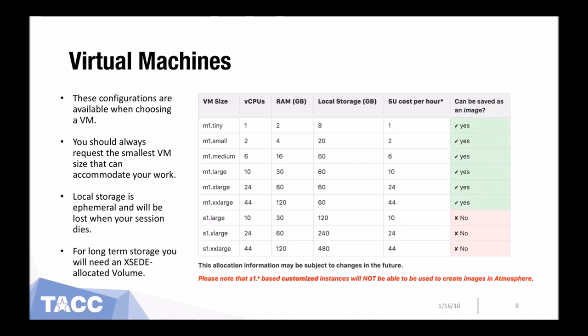The first consideration is how many CPUs you want to run on, but you'll also want to consider the amount of local storage on a VM. This storage can be useful while you're running, but you do need to keep in mind that it's not permanent. Once you kill the VM instance, all of that local storage disappears with the instance. So anything you want to save long term, you'll need to back up outside of the VM — either to a volume or to something on your personal machine.